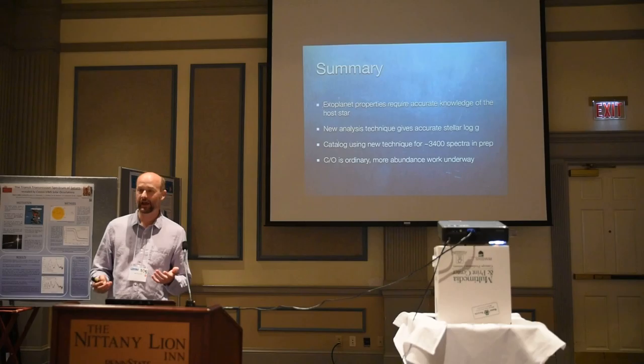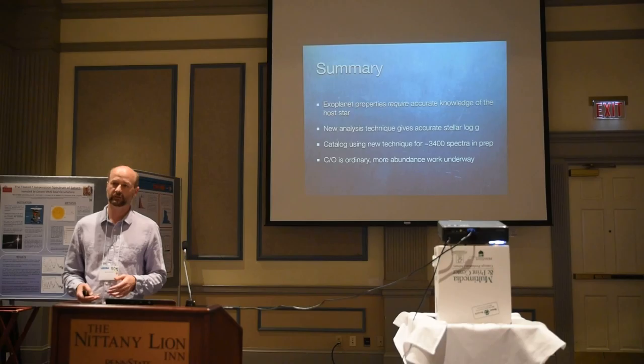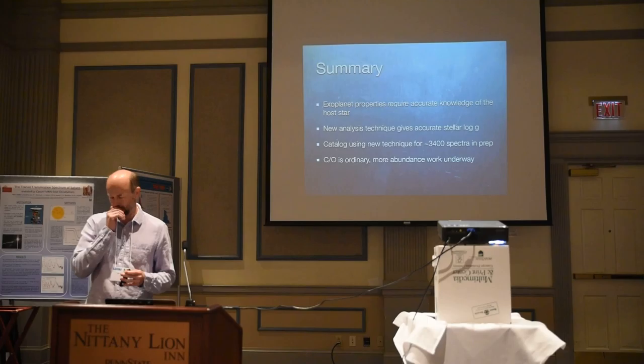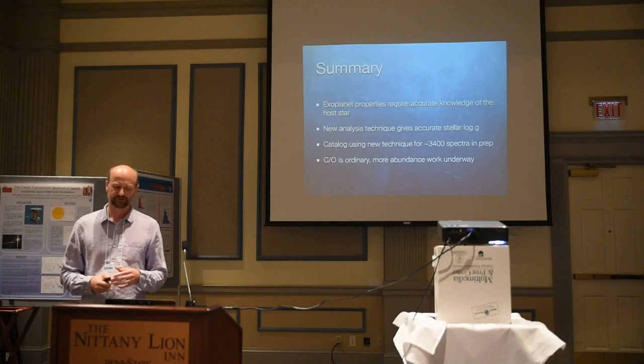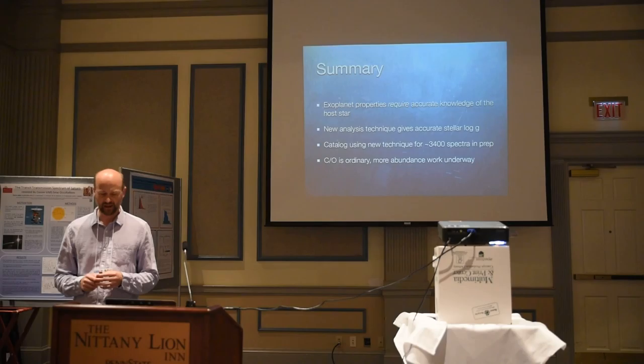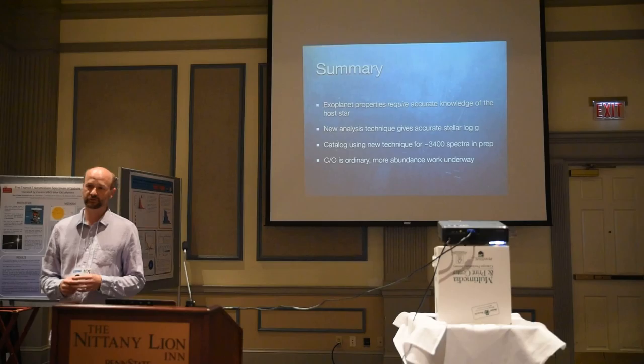To sum up: to get at the properties of the planets, we really need to know the stellar properties. This new technique gives us accurate gravities, and I'm hoping to show it also gives us accurate abundances. I'll be publishing the catalog with all of these parameters, as well as some initial looks at the planet implications. Thank you.